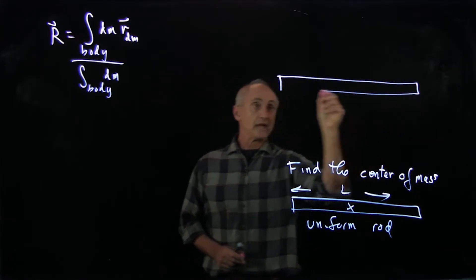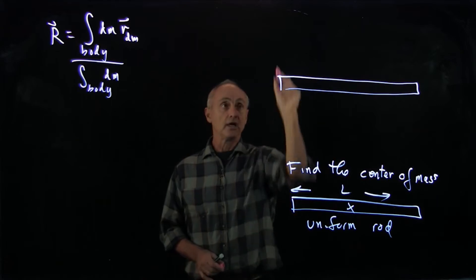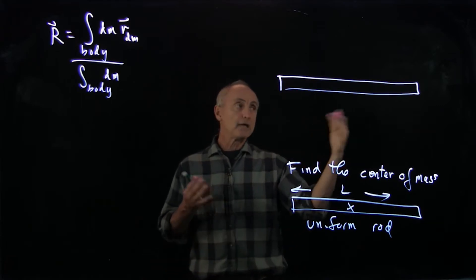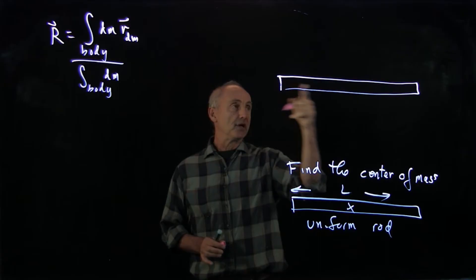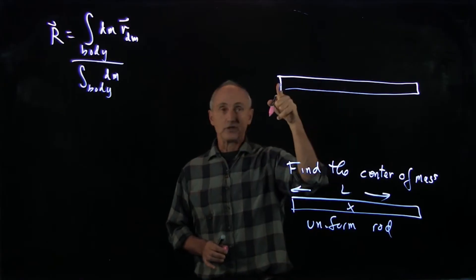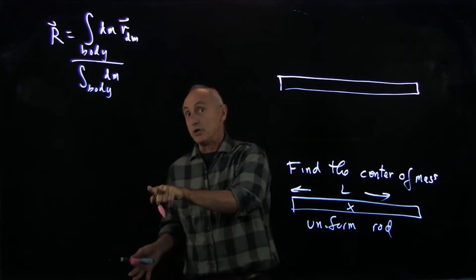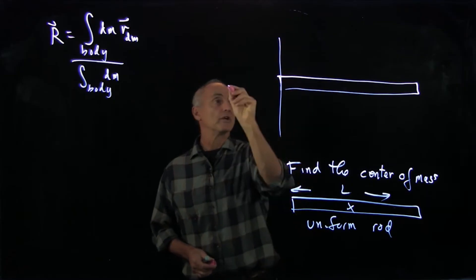So now I'll draw the object again. And the first thing I'll do is choose an origin. I can pick my origin anywhere I want. I could pick it in the middle, I could put it at this end, I could put it at that end, I could put it down here, but I'll choose it over here.